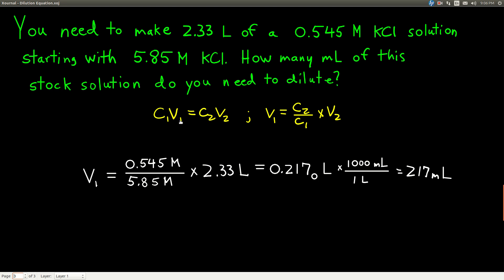So if you solve for V1 by cross-multiplying, dividing both sides by C1, you get this equation right here, V1 equals C2 over C1 times V2.